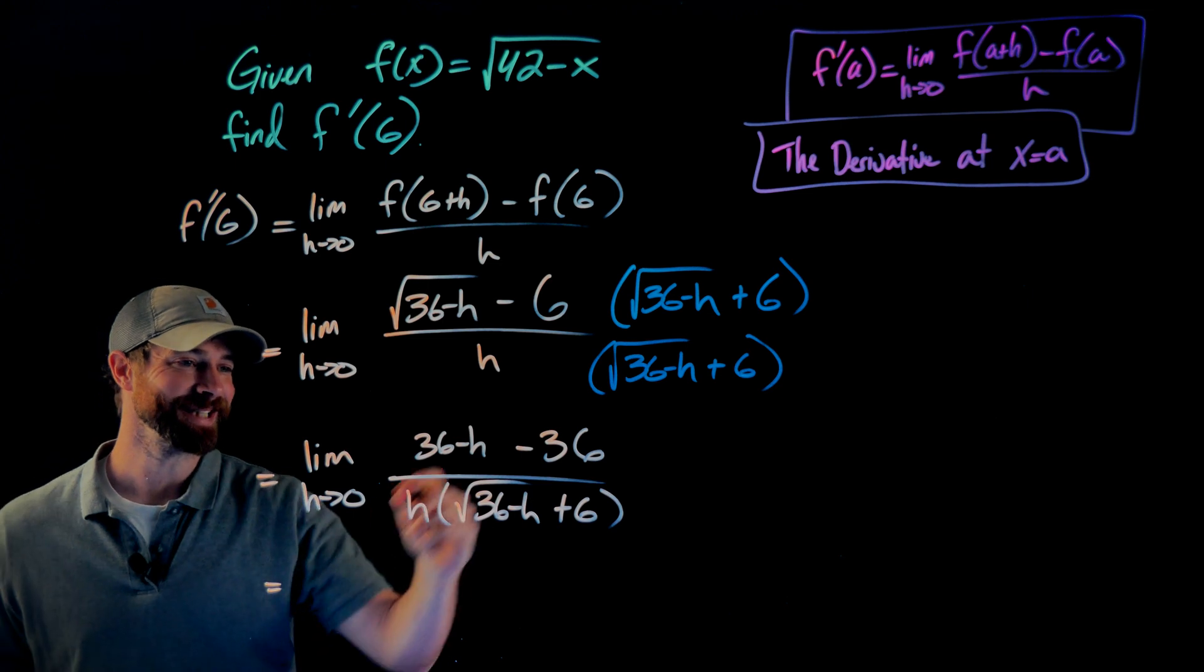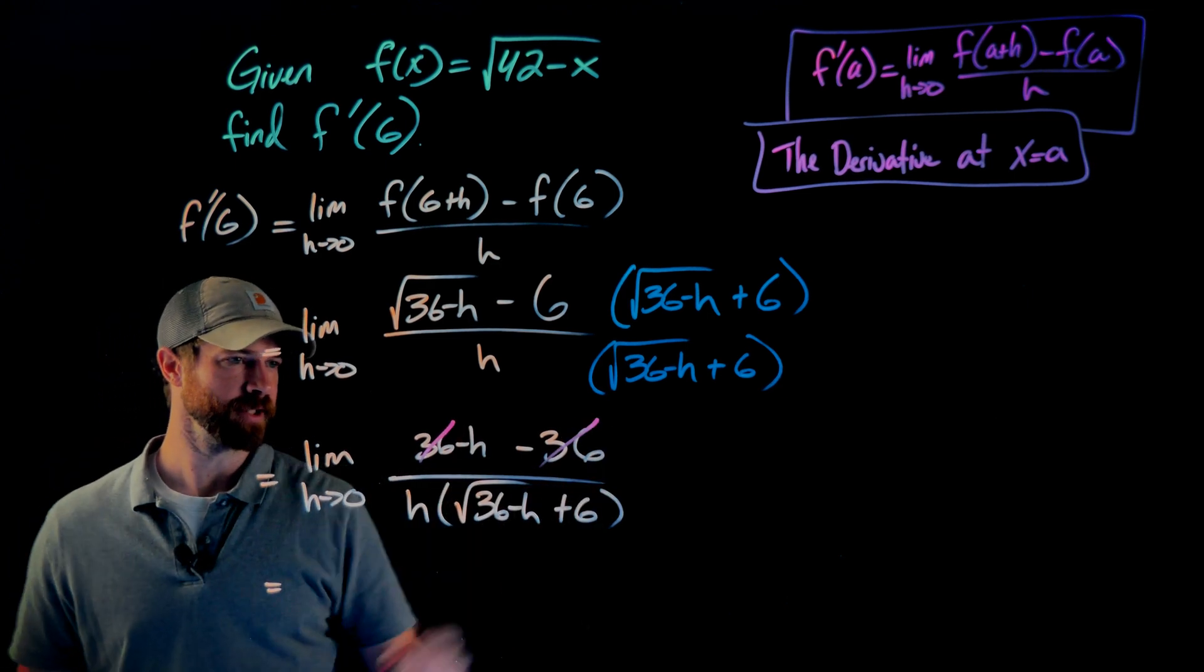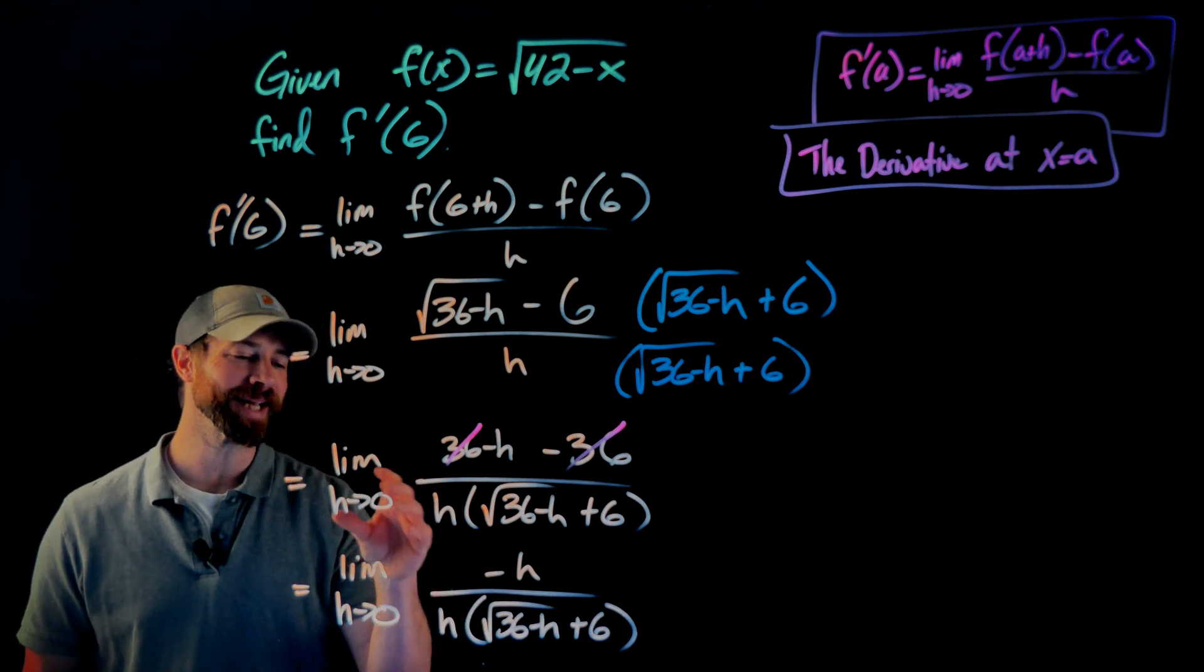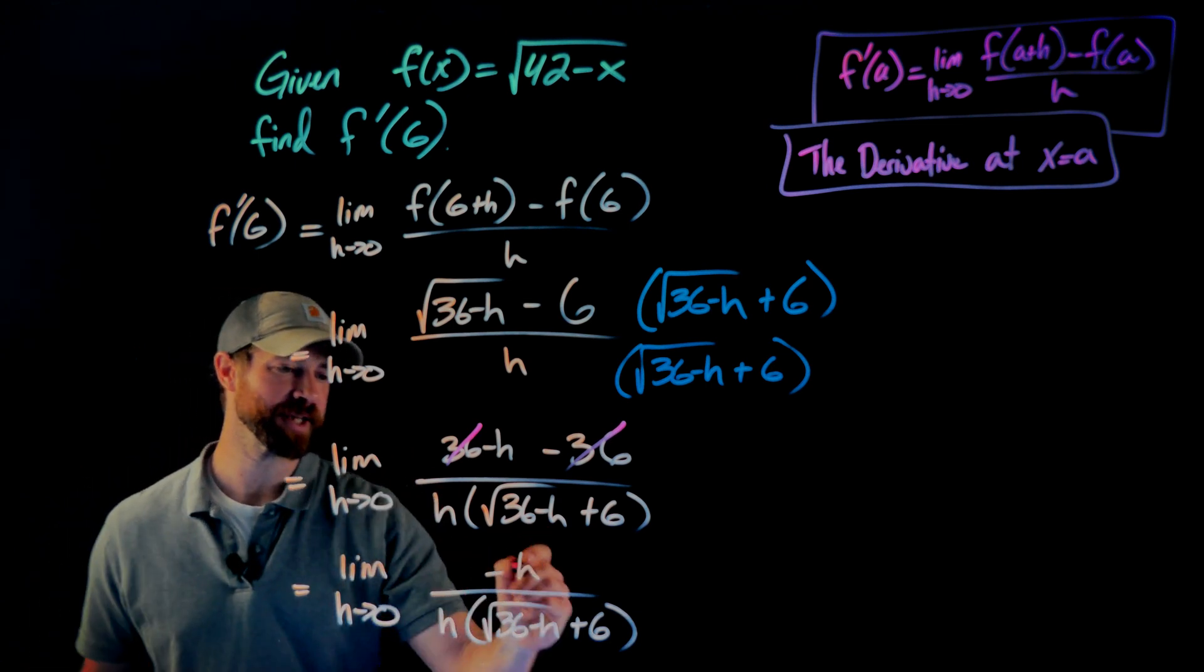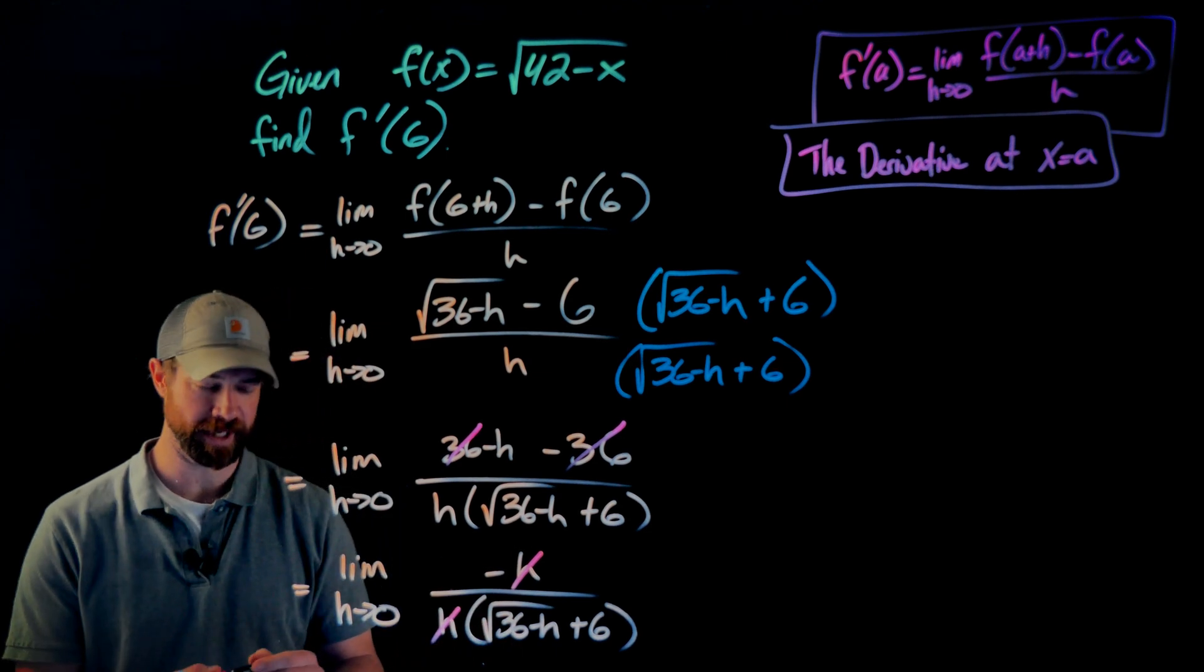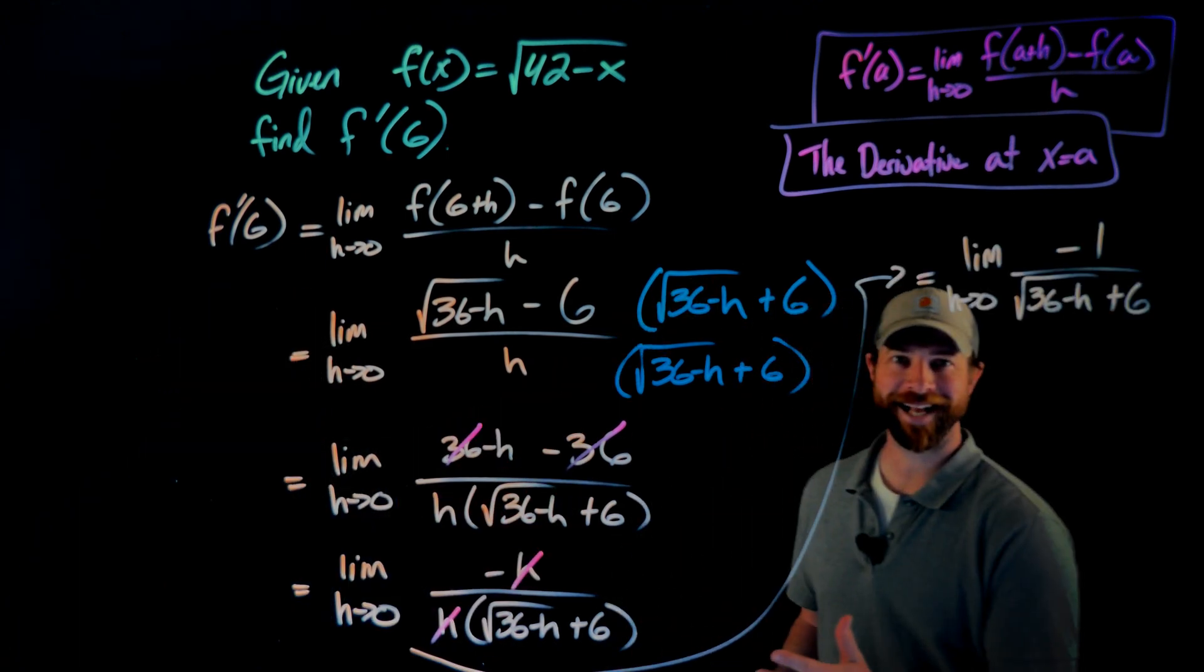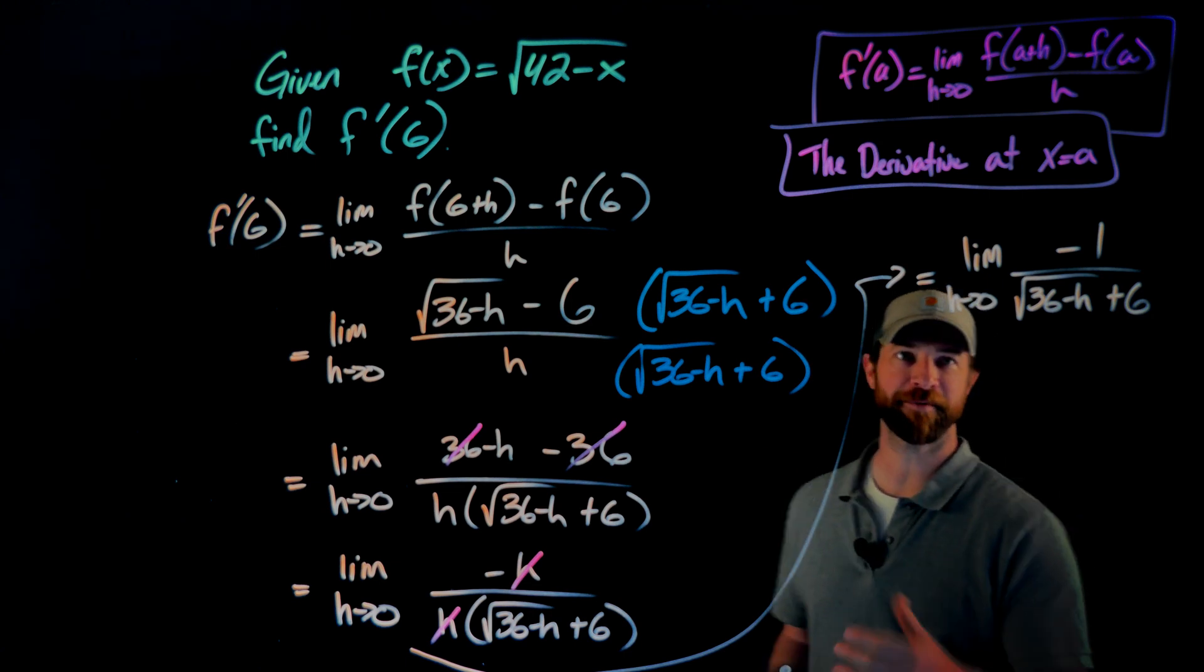All right then, to clean things up here, I'm going to just cancel this positive 36 and the negative 36. Now I actually can do what I was hoping I can do. I can cancel that factor of h between the numerator and the denominator right here. And let me rewrite this up here. That canceling of the h, as said before, was exactly what I was hoping for.